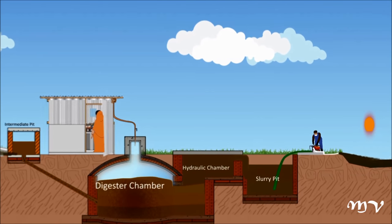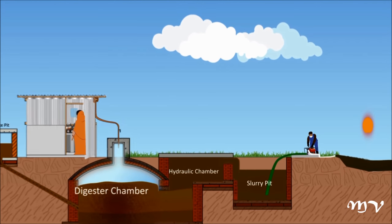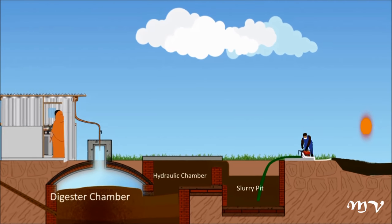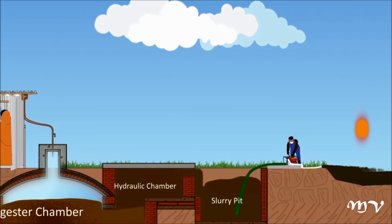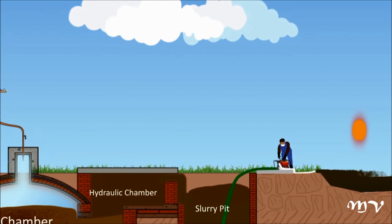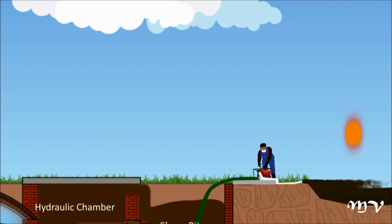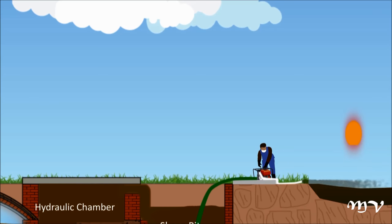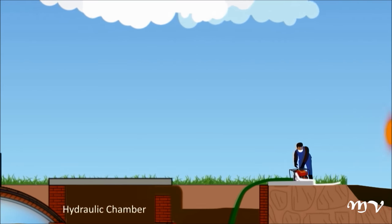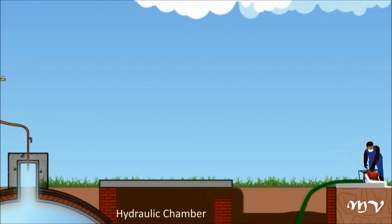The final sludge contains 93% water, 4.5% organic matter, and 2.5% inorganic matter, which is less harmful. Finally, with appropriate transformation processes, the slurry can be valorized as manure.